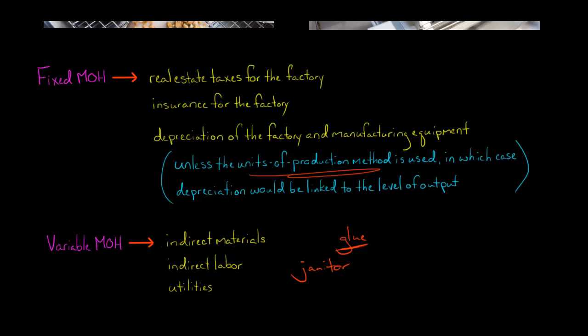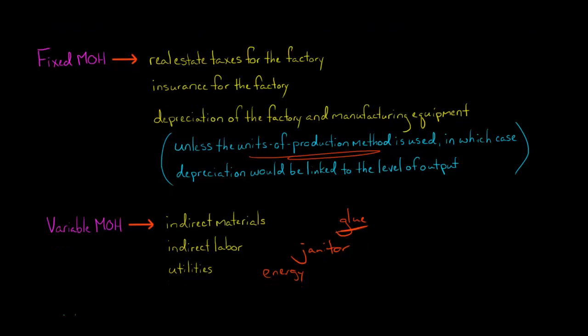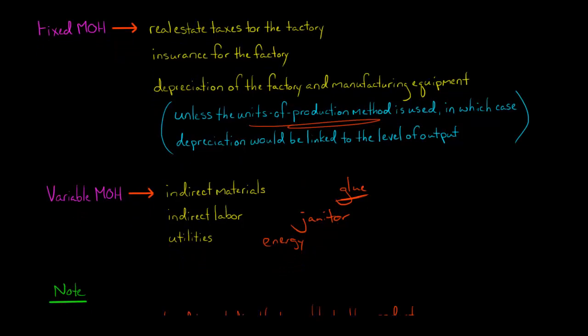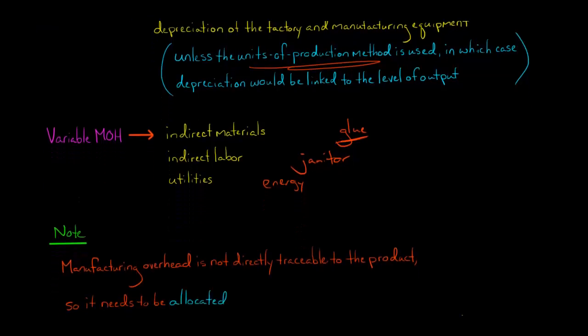We would expect that we'd use more indirect materials and more indirect labor as production increases. Utilities — particularly energy costs — we'd also expect to increase as production increases, because in a factory the more we're ramping up production, the more energy we consume. So all these costs vary with production level, whereas real estate taxes or insurance for the factory don't change based on how many units we produce.